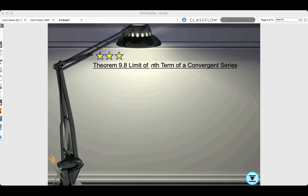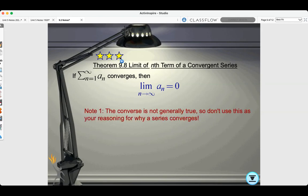Theorem 9.8, Limit of nth term of a convergent series. If the sum from n equals 1 to infinity of a_n converges, then the limit as n approaches infinity of a_n is 0. Note, the converse is not generally true, so don't use this as your reasoning for why a series converges.